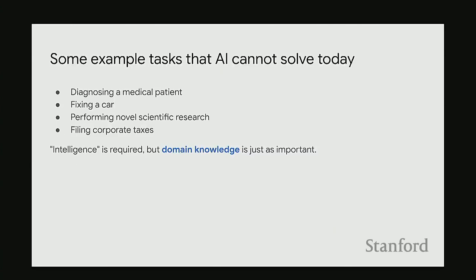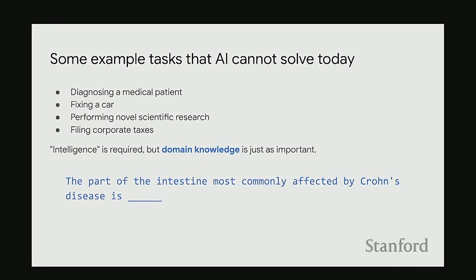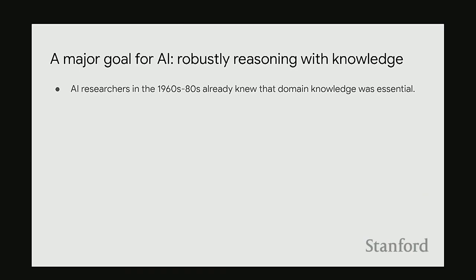It's not intelligence alone that enables you to do these things. You have to have long experience — for example, knowing what a car's components are. If you ask a language model: 'The part of the intestine most commonly affected by Crohn's disease is,' my latest query to GPT-2 says the rectum, but actually it's the ileum. If you're in the medical field making this level of mistake, you probably need to go back to training.